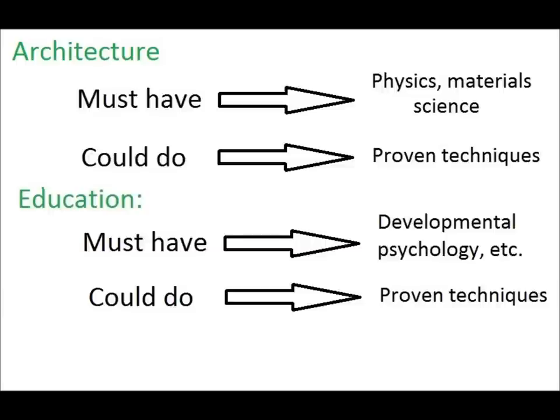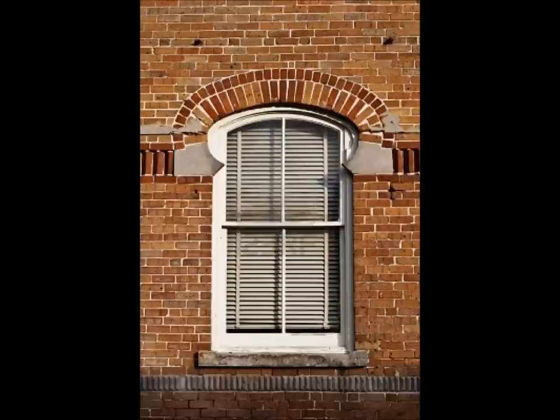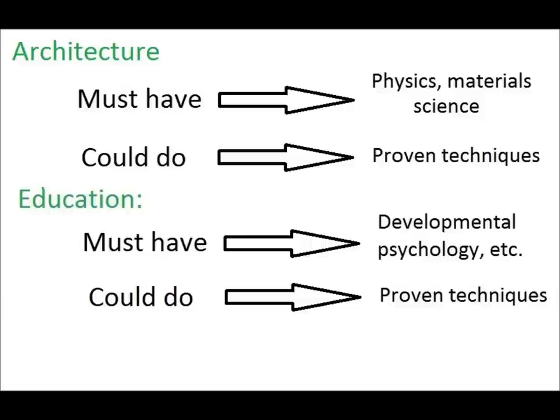Likewise, there are standard rules of thumb and techniques to ensure that these principles are being met. If you want to put a window in the middle of a brick wall, there are standard ways that you can ensure that the wall won't collapse in the space created by the window. Those would be the could-dos in architecture.